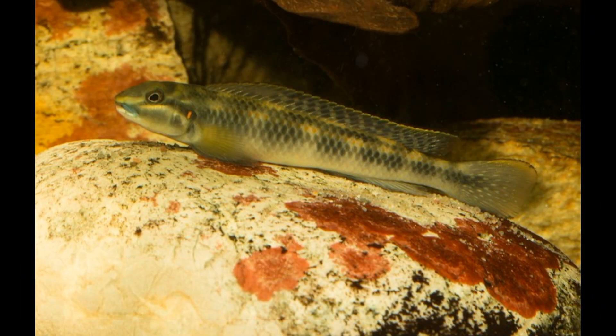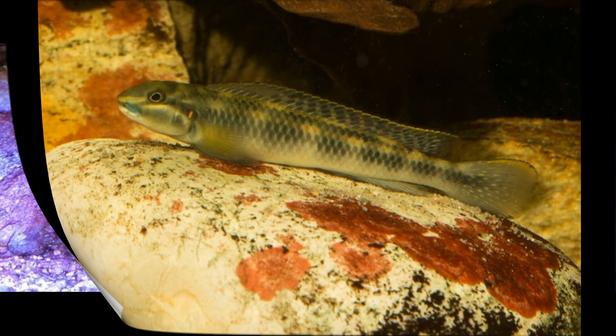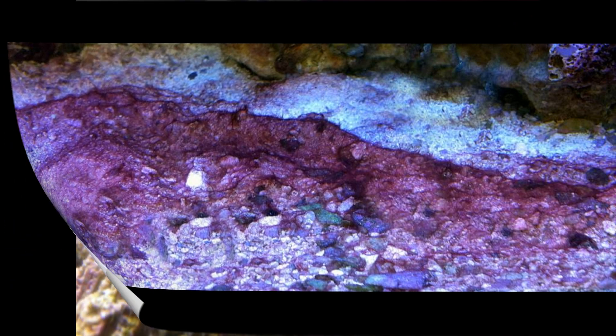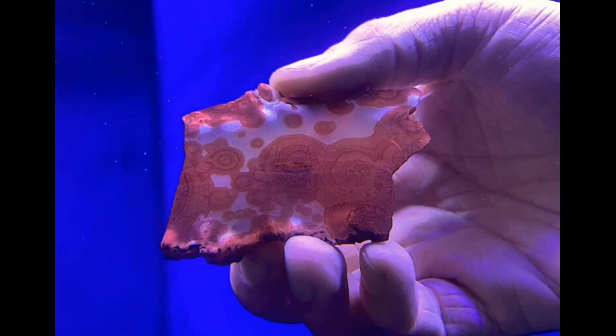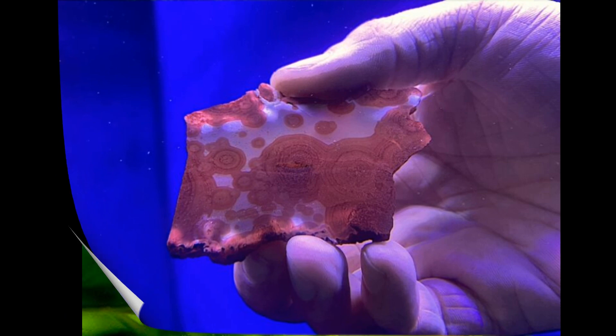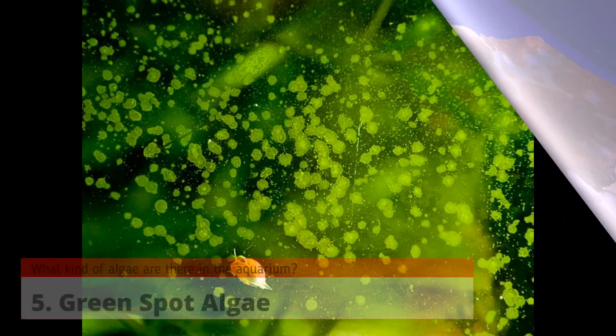Four: red algae. Red algae, also known as brush or beard algae, can appear as tufts or filaments that are reddish or purplish in color. They can attach themselves to plants, rocks, or other surfaces in the aquarium. Red algae growth is often associated with low levels of carbon dioxide (CO2) and poor plant health.